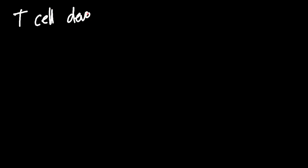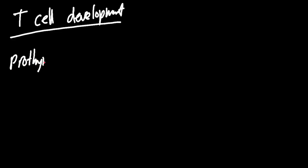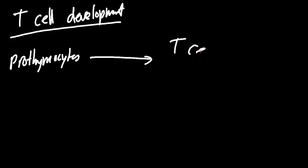Let's learn about T cell development. We're initially going to have prothymocytes — something before we get to a T cell — that begins to develop in the thymus, and eventually we'll get different T cell lineages.